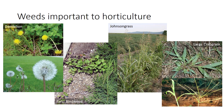Johnson grass is a perennial grass that reproduces sexually by seed and asexually by rhizomes. This weed presents its greatest problem in the southern United States. Large crabgrass is an annual grass with fibrous root systems and spreading habits, and is a problem in lawns all over the United States.